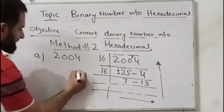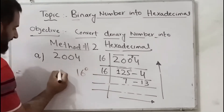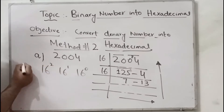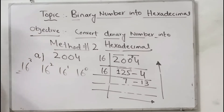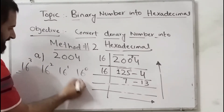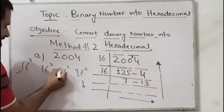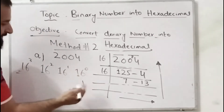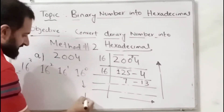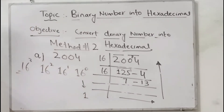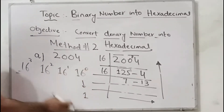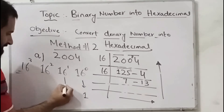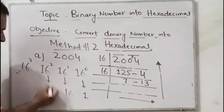First of all, we will write 16 power 0, then 16 power 1, then 16 power 2, then 16 power 3. Now, everything raised to the power 0 gives you 1, so 16 power 0 means 1. And 16 power 1 means 16.